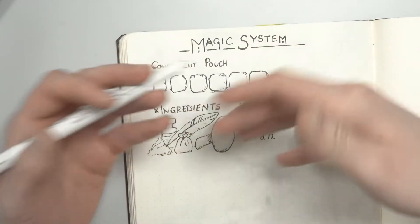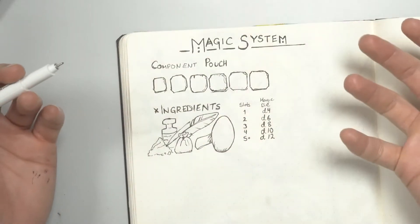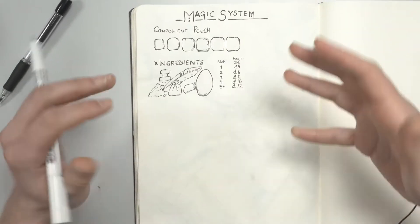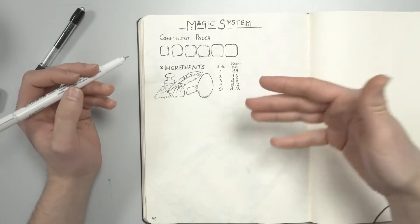If you roll equal to or lower, you fail. You still manage to cast the spell, but you lose an ingredient.